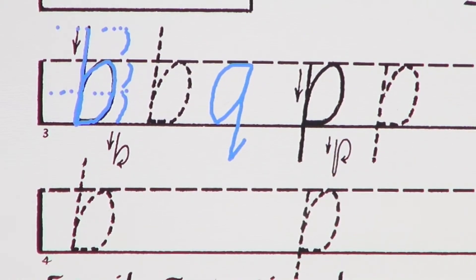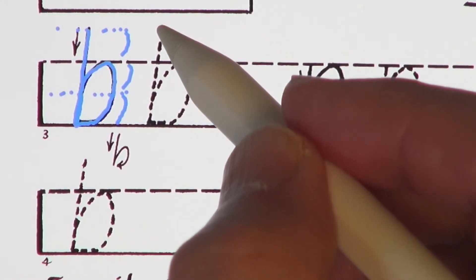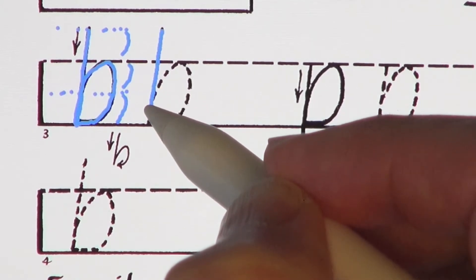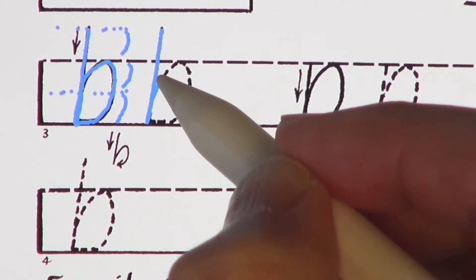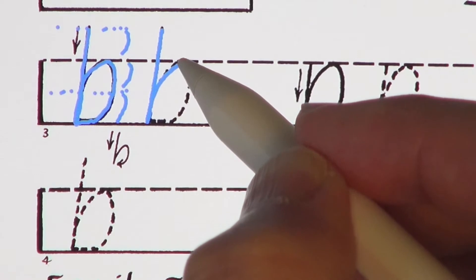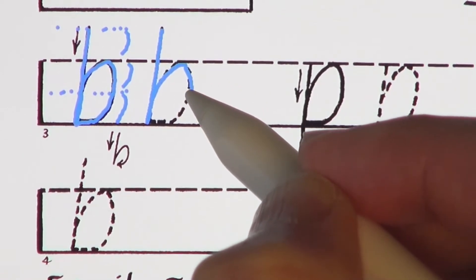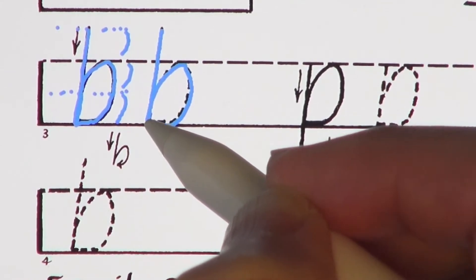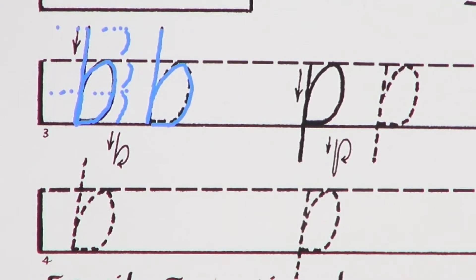Let's practice more by tracing the dashed line model. From above the waistline, move downward to the baseline, move upward to the branching line, branch upward to the waistline, then downward in an elliptical curve. Close the shape horizontally on the baseline.